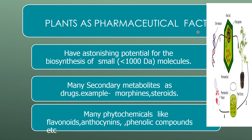Plants have astonishing potential as pharmaceutical factories for the biosynthesis of small molecules. Many secondary metabolites used as drugs, such as morphine and steroids, can be synthesized from plants. Many phytochemicals like flavonoids, anthocyanins, and phenolic compounds can also be synthesized in plants. The gene of interest is transferred to the plant cell through Agrobacterium-mediated transformation. Once the plants grow, they produce the secondary metabolite — such as morphine or steroids — which can then be extracted and utilized for pharmaceutical purposes.